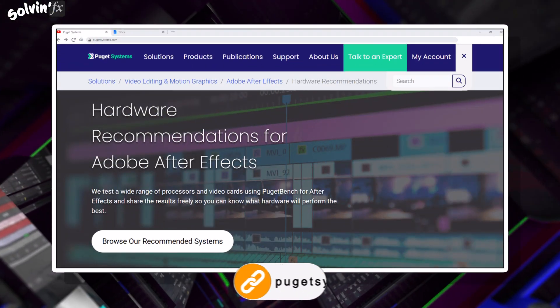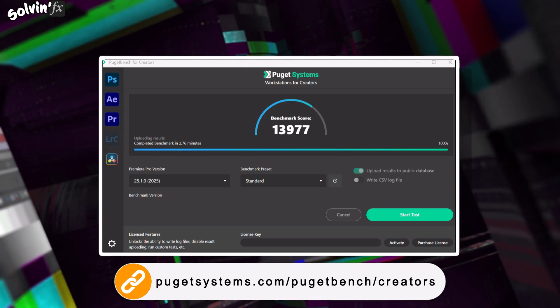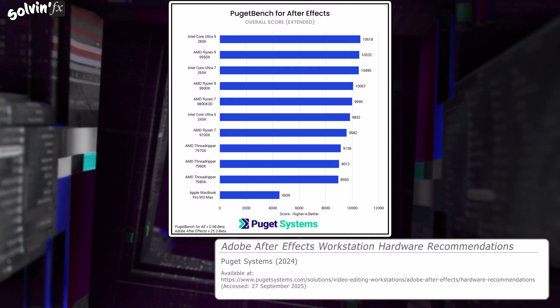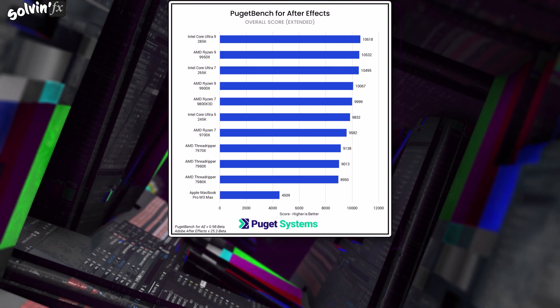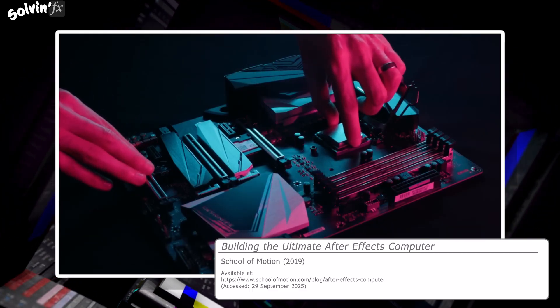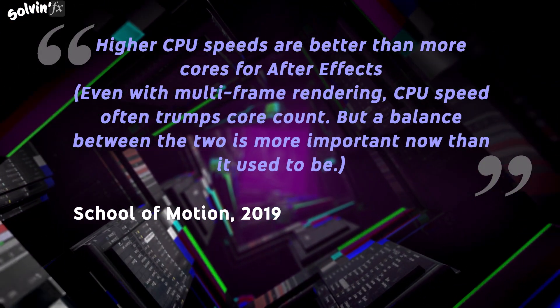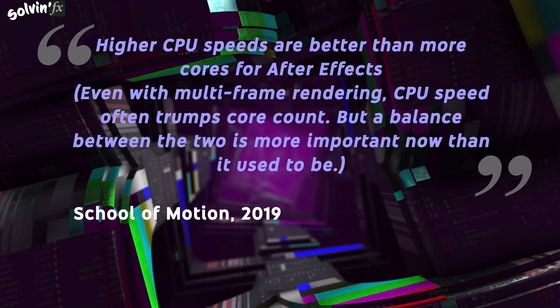But personally I suggest as much RAM as you can get. Puget Systems have done a huge amount of research into After Effects and even introduced a benchmarking tool. Obviously this is not something you can easily run on a computer you're considering buying, but it can highlight your current setup. They also regularly benchmark processors. Ultimately I think it's clear that the CPU manufacturer doesn't really make much difference — that was not always the case, with Intel being most After Effects' favourite. But the data doesn't lie. Clock speed is still important, and with multi-frame rendering, After Effects can use multiple cores. Higher CPU speeds are better than more cores for After Effects. Even with multi-frame rendering, CPU speed often trumps core count, but a balance between the two is more important now than it used to be.